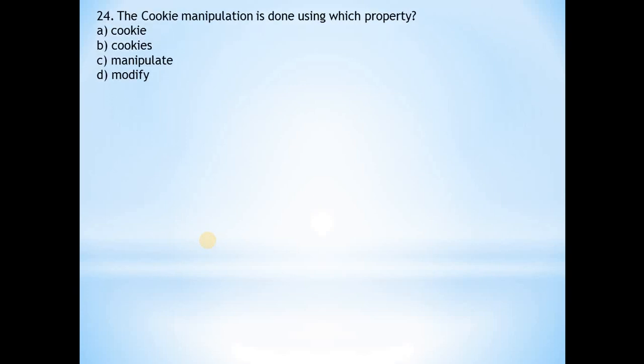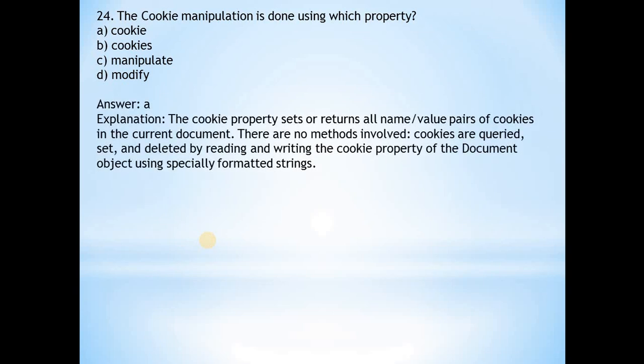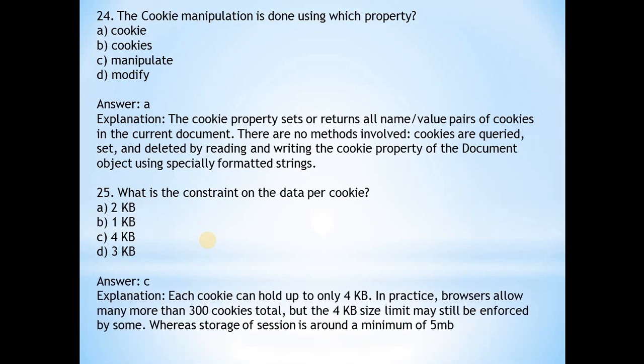Question 24: The cookie manipulation is done using which property? Answer is a, cookie. This property sets or returns all name/value pairs of cookies in the current document. Next: What is the constraint on the data per cookie? Answer is c, 4 KB. Browsers allow many more than 300 cookies total, but the size limit is 4 KB.